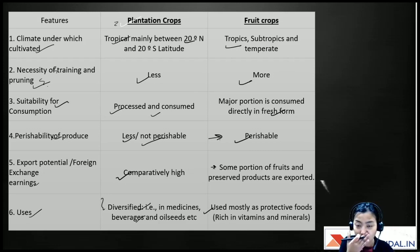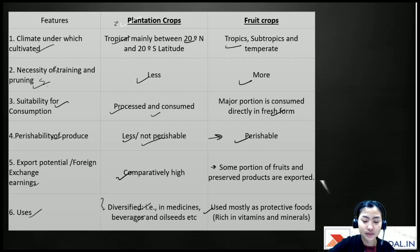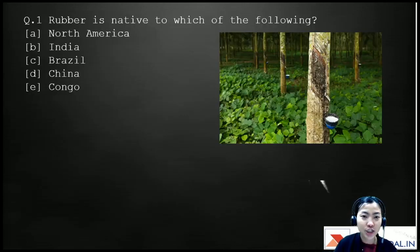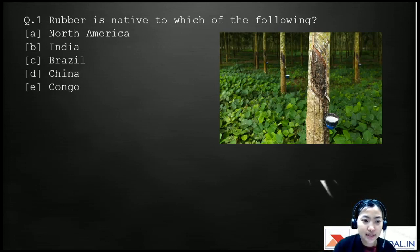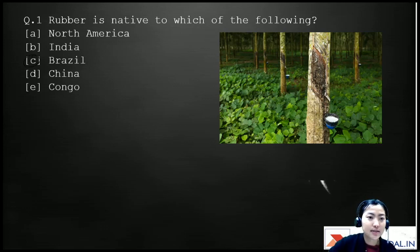Our first question is on rubber: rubber is native to which of the following? A) North America, B) India, C) Brazil, D) China, E) Congo. The right answer is Brazil — rubber originated and is native to Brazil.